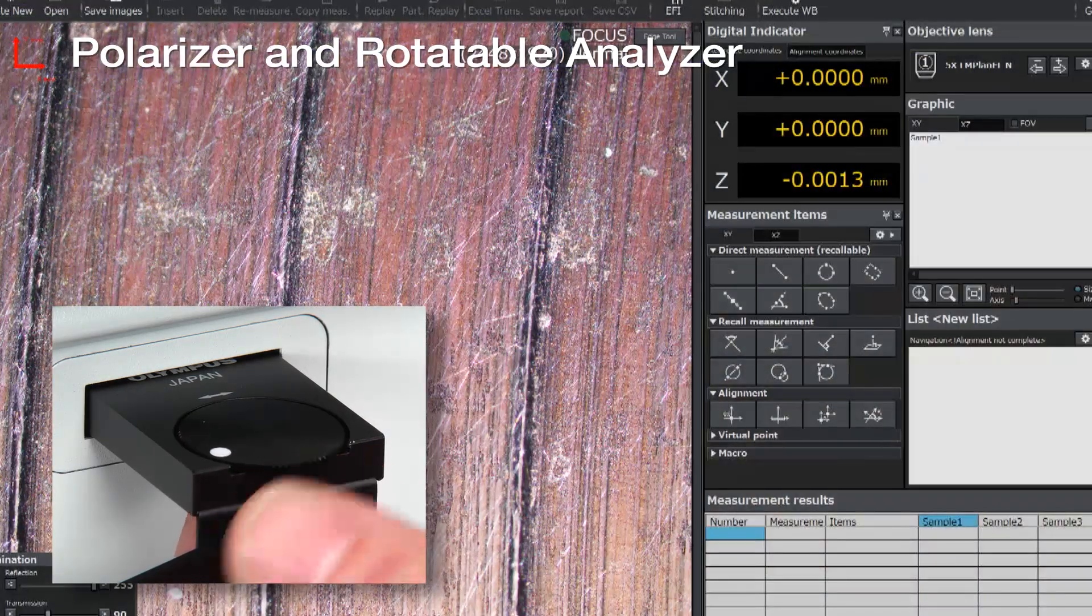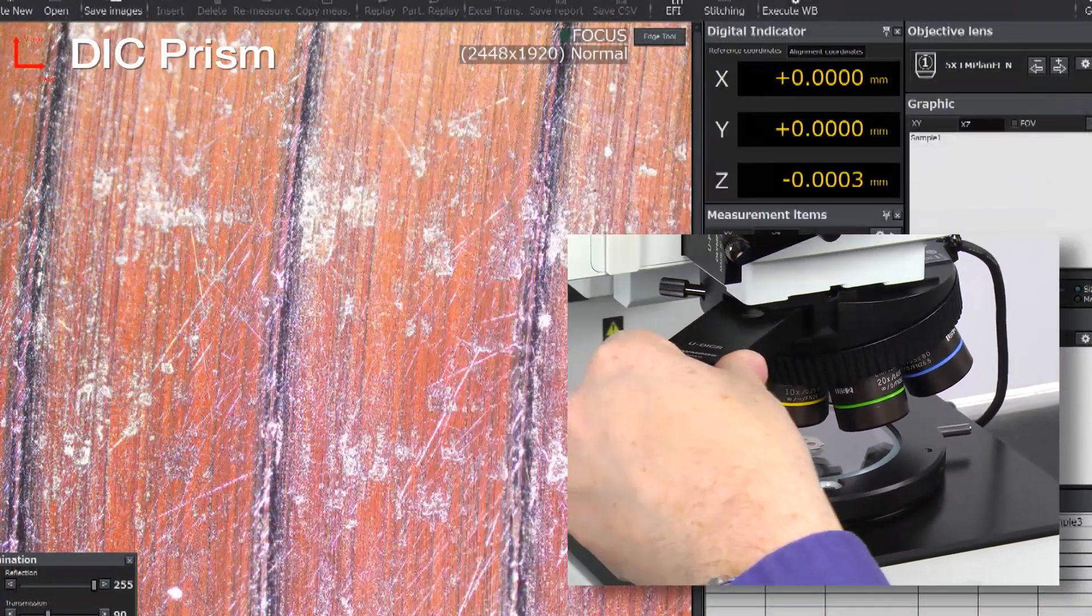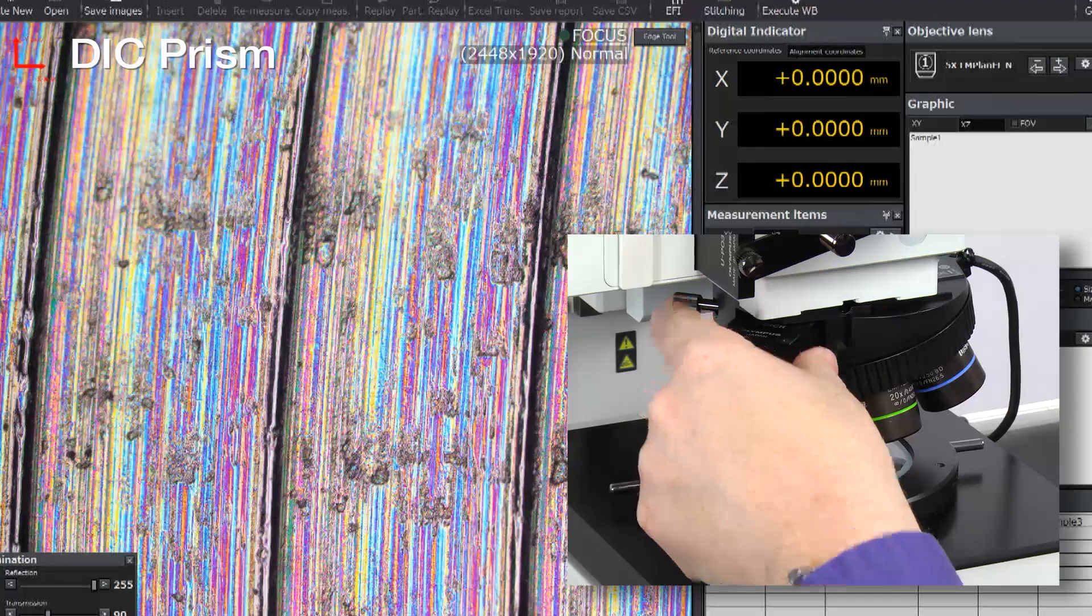For highly reflective surfaces, users can add a polarizer and rotatable analyzer. Adding a DIC prism improves the visibility of minor surface changes.